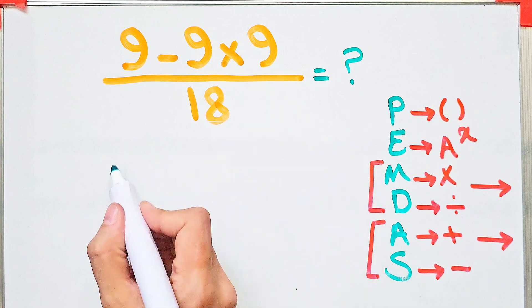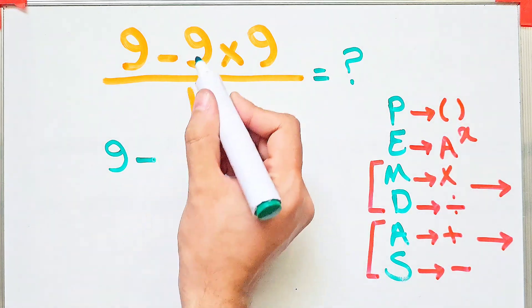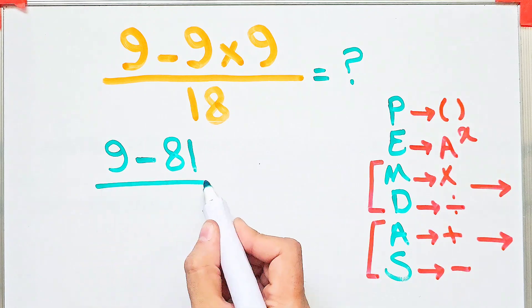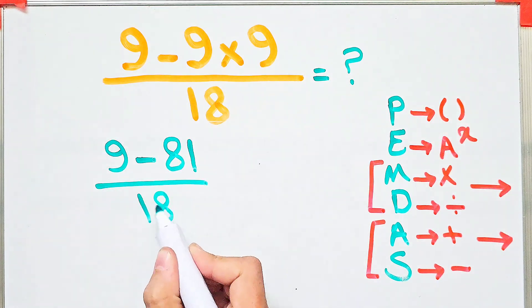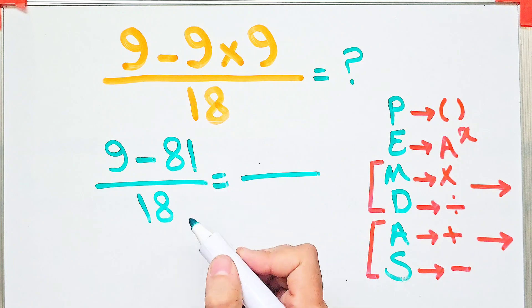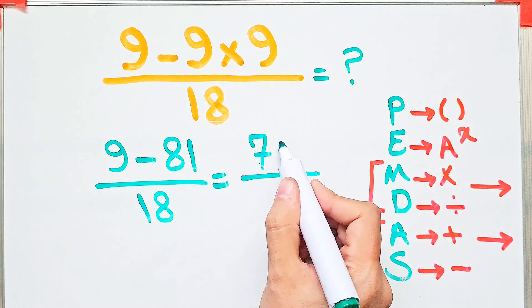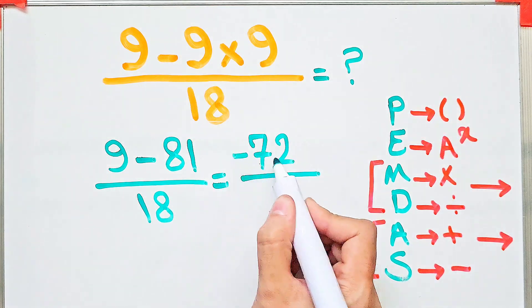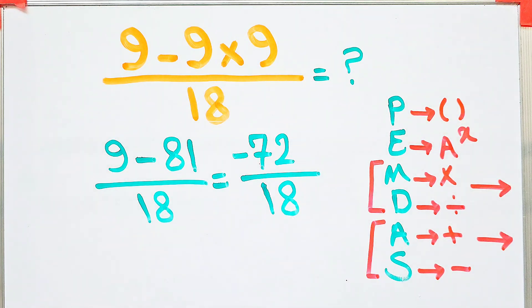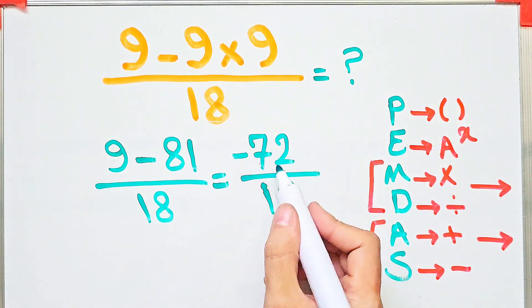9 minus 9 times 9, that equals 81, then divided by 18. 9 minus 81 equals negative 72. We have negative 72 divided by 18. Negative 72 divided by 18 equals negative 4, and we get the final answer of this question.